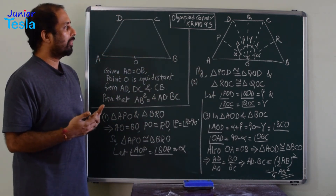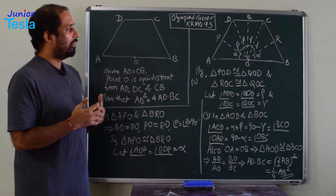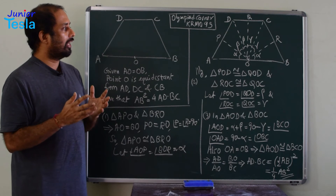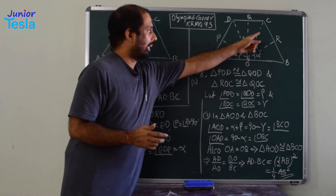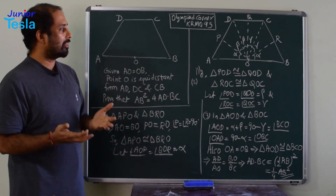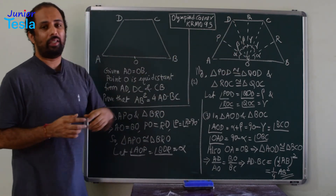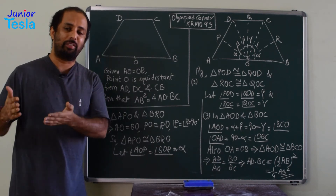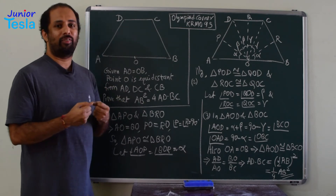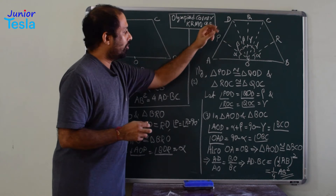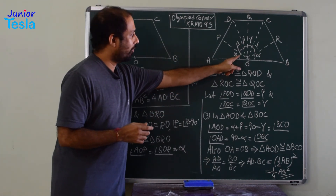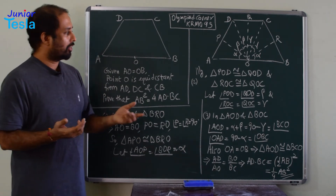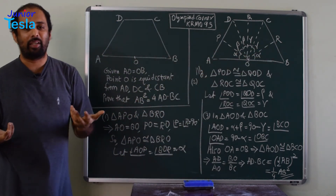Where is 90° − gamma in triangle BOC? Angle BCO = 90° − gamma. Why? Because in triangle ORC, one angle is gamma (angle ROC = gamma) and angle ORC = 90°, so the third angle, angle OCR, must be 90° − gamma. Therefore angle AOD and angle OCB are equal — both equal alpha + beta = 90° − gamma, since alpha + beta + gamma = 90°.